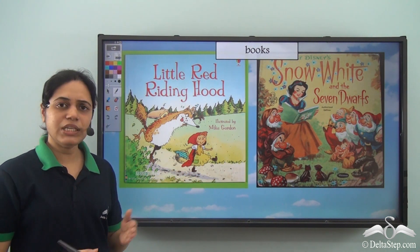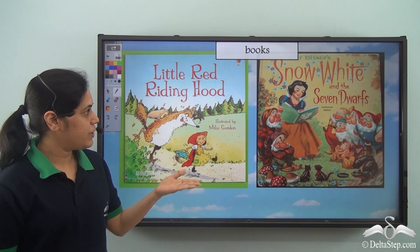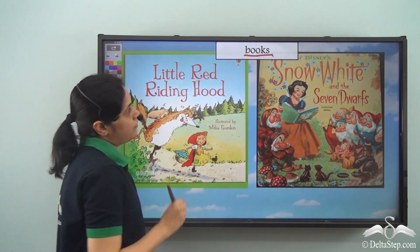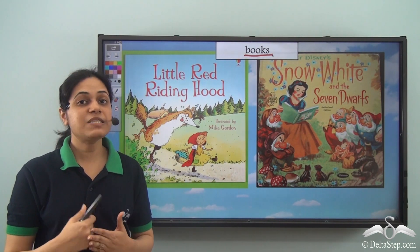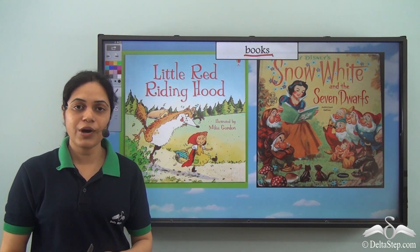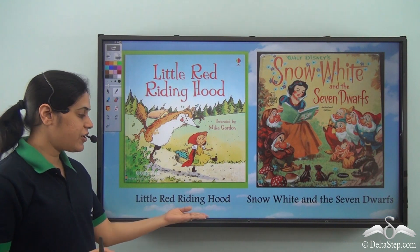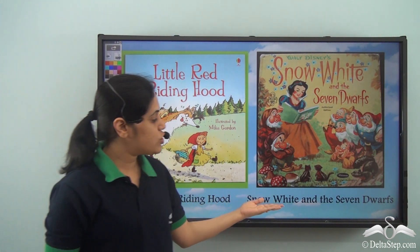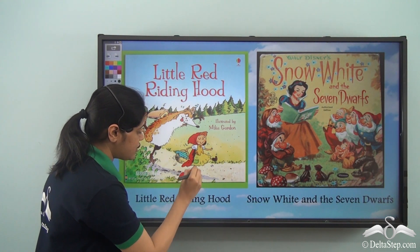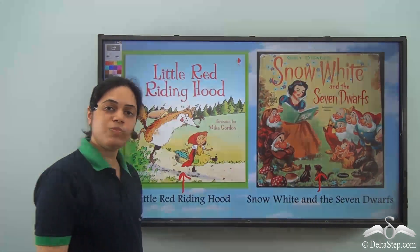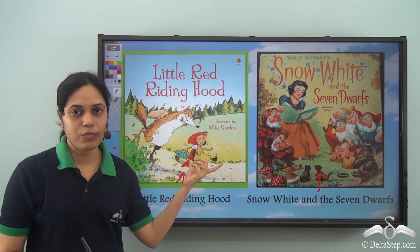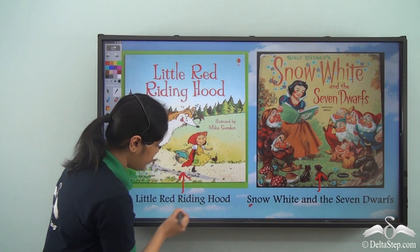Similarly, if I ask you what are these, your answer will be books, because these are images of books. Now books are things, so books is a noun. But when I say books or book, am I specifying anything? No — it is the general name given to all books. So books is a common noun. But if I write Little Red Riding Hood, which is the name of this book, or Snow White and the Seven Dwarfs, which is the name of this book, then I am specifying the names of these books. So these are proper nouns — when I tell you to get me Little Red Riding Hood, you will get me this specific book and not just any book. And see, they start with a capital letter.